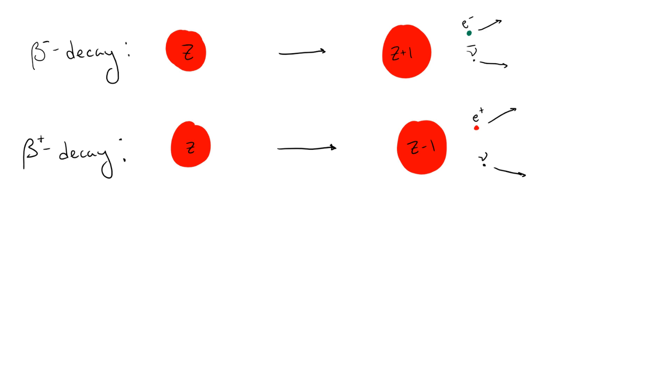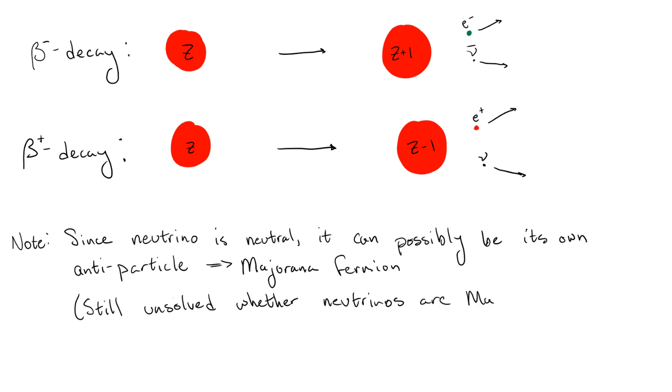There is a caveat to this. Since the neutrino is uncharged, there is a possibility that it is in fact its own antiparticle similar to the photon. A fermion which is its own antiparticle is known as a Majorana fermion. Whether or not neutrinos are Majorana fermions is still an unsolved question still being explored today.